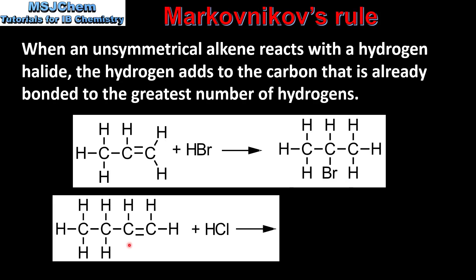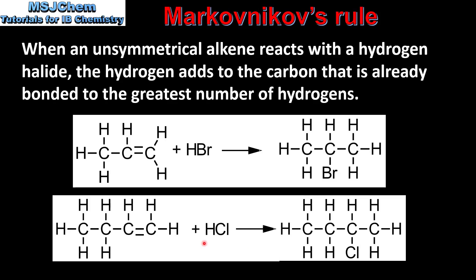Let's look at another example. In this reaction we have butene reacting with hydrogen chloride. Using Markovnikov's rule we can predict the major product. The hydrogen atom bonds to the carbon that's already bonded to the greatest number of hydrogens, which is this carbon here. So the major product is 2-chlorobutane.